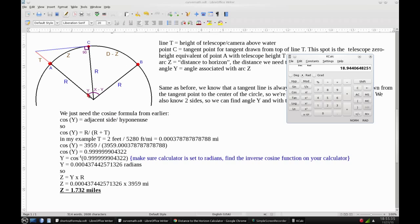So the cosine of Y, this angle here, equals the adjacent side divided by the hypotenuse. So cosine of Y equals R divided by R plus T. So when I did my experiment, my telescope height was two feet. So I'm going to use that, and I'm going to convert that to miles.